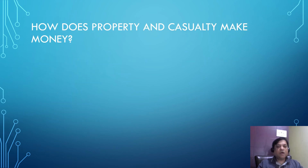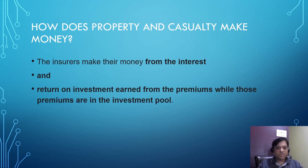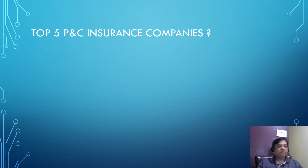How does property and casualty insurance make money? Insurers make their money from the interest and return on investment earned from premiums while those premiums are in the investment pool. Huge profits can be reaped by insurance companies with this method.